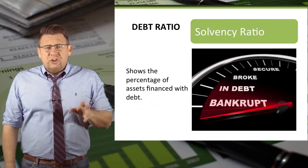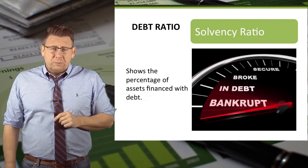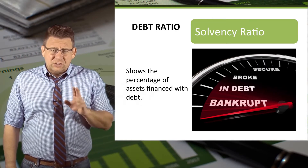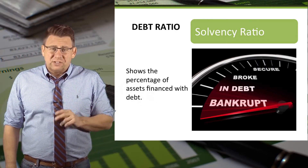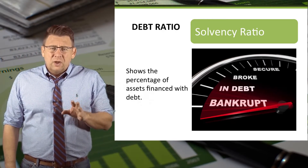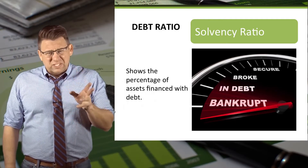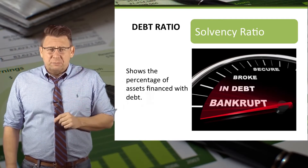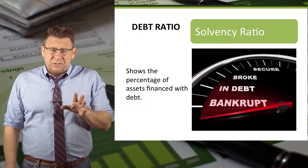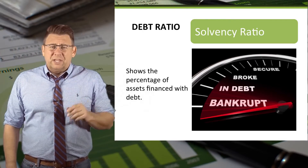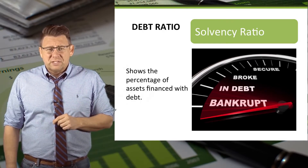In general, a debt ratio of less than 30% suggests the company isn't as efficient as it could be, whereas a ratio of more than 75% suggests possible bankruptcy if the company experiences a downturn in business.